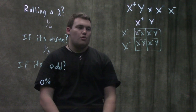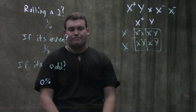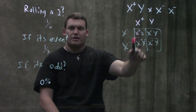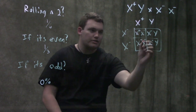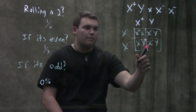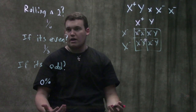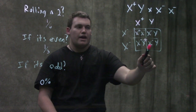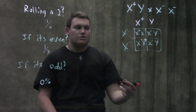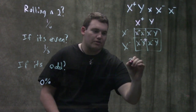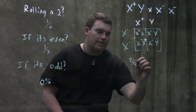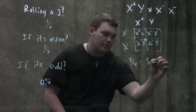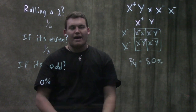Looking at our Punnett square: this child — not colorblind, this child — not colorblind, this child — X-minus and Y, colorblind, and this child — X-minus and Y, colorblind. So the chance that we're going to have a child that is colorblind is two out of four, or fifty percent.